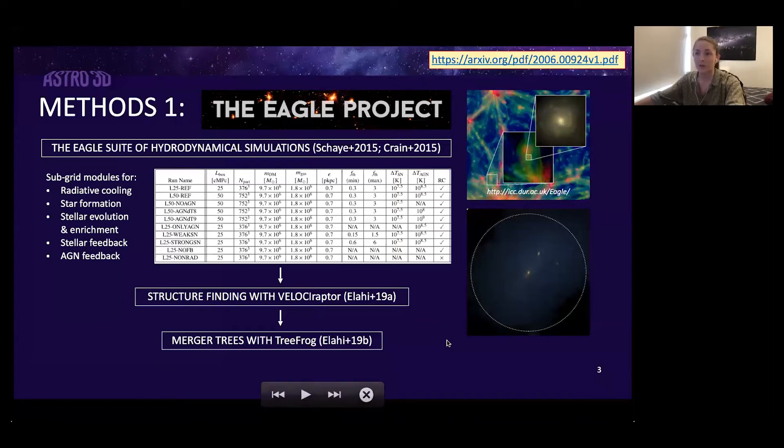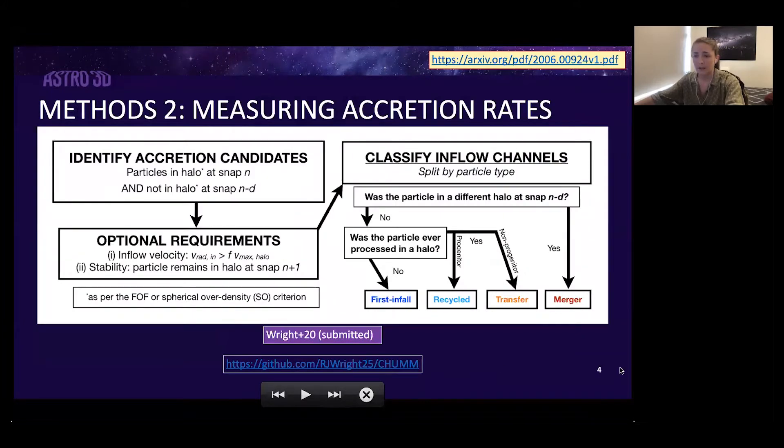To identify halos in the simulations we use the structure finder VELOCIraptor and the merger tree generator TreeFrog to give us our temporally linked halo catalogs, both of which we heard a little bit about from Chris. Before leaping into the results, I'll quickly run you through our methodology to actually measure inflow rates. We identify accretion candidates as those particles that are in a halo at a snapshot n but were not at a previous snapshot n minus d. For all intents and purposes we use d equals one, so essentially measuring accretion to halos between adjacent EAGLE snapshots. We can then classify the channel of accretion based on the history of each particle, breaking down accretion into its constituent components. I don't really have too much time to go into this, but it's all in the paper if you are interested.